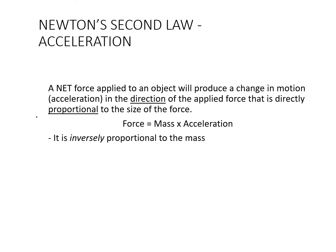Newton's second law of acceleration states that a force applied to an object produces a change in motion in the direction of the applied force, directly proportional to the size of that force. This is expressed as: force equals mass times acceleration (F = ma). The direction and proportion of the force impacts acceleration — like aiming an arrow and how far you pull back the string. It's also inversely proportional to mass: it's harder to accelerate a shot put than a tennis ball.